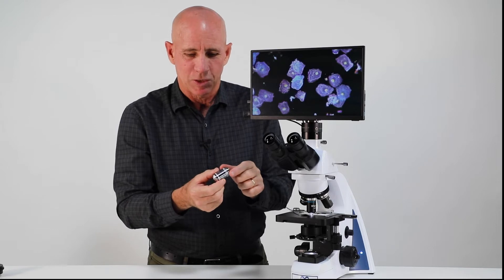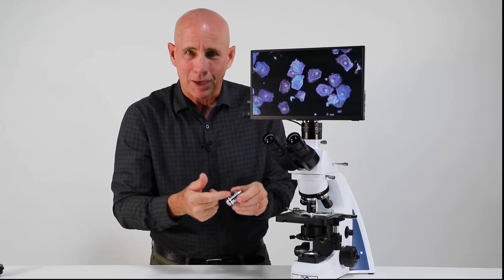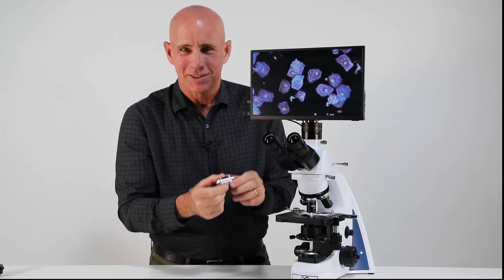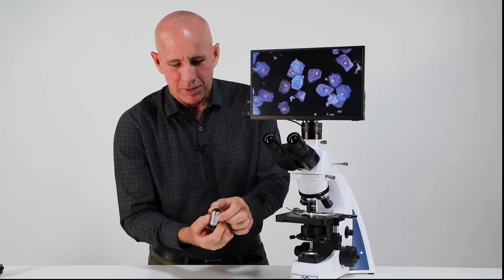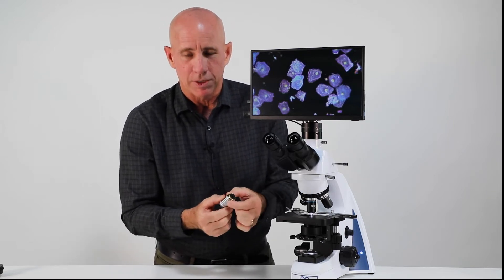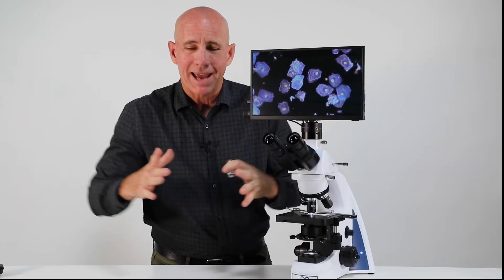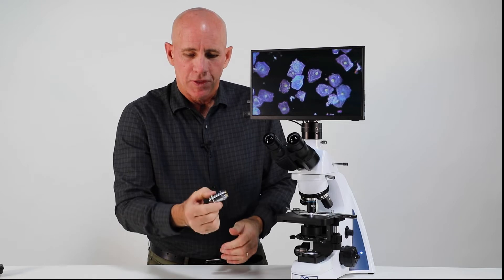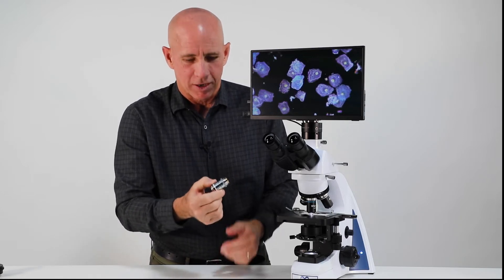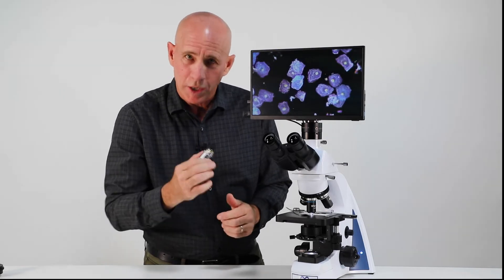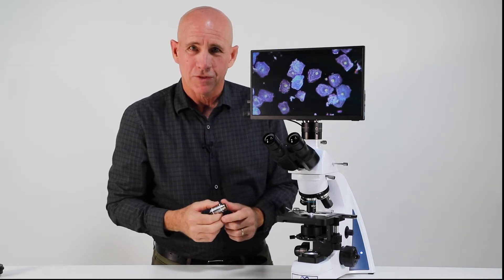But the 100X will not work in dark field unless you get the special 100X dark field objective. Now this one, to be more specific, is a 100X infinity plan dark field oil objective. So that's a lot to say. But the interesting thing about this is it has an iris on it and it can open and close. So basically I can bring my aperture down so this will work in the dark. So we will install this and then you will see how the 100X dark field objective can work.